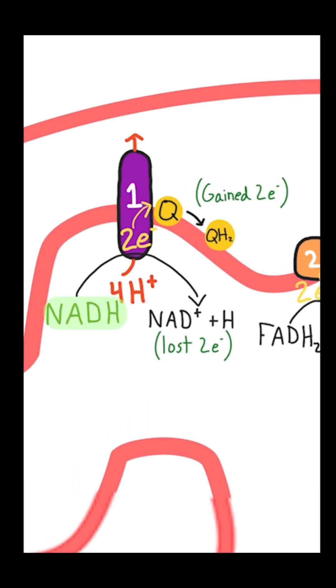All of the NADH produced in the Krebs cycle or in glycolysis transports its electrons to Complex 1, which is shown by this reaction here where NADH becomes NAD+ and loses two electrons that then go to Complex 1.